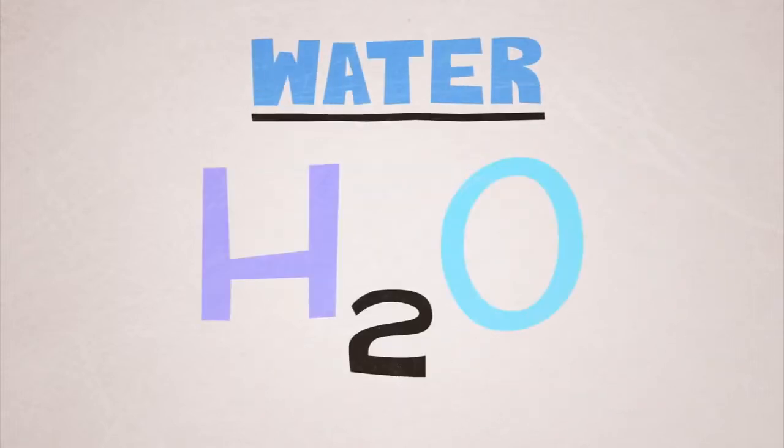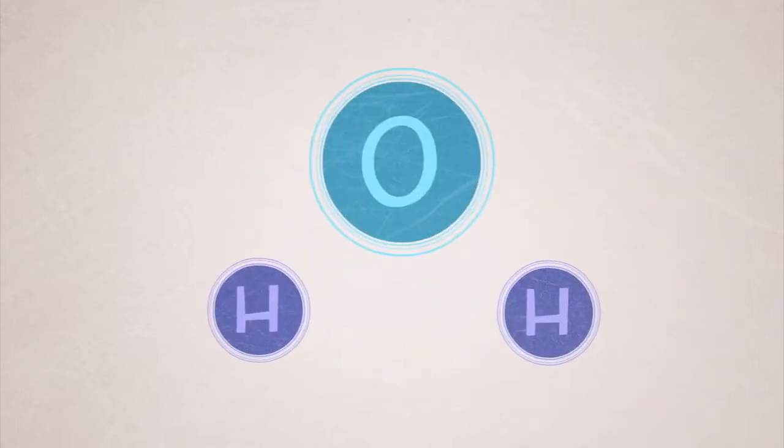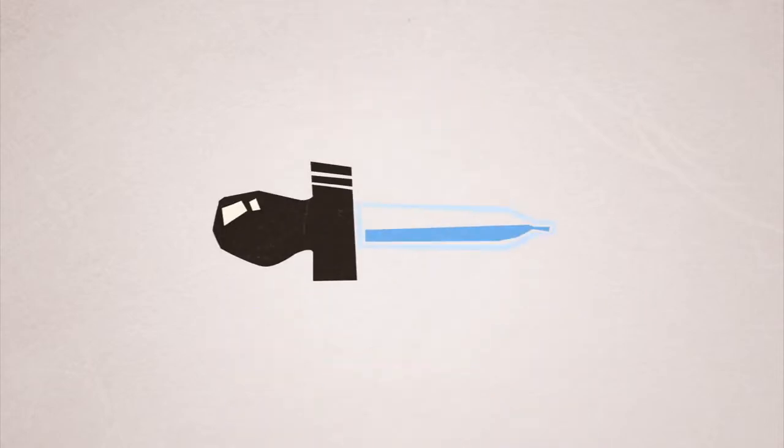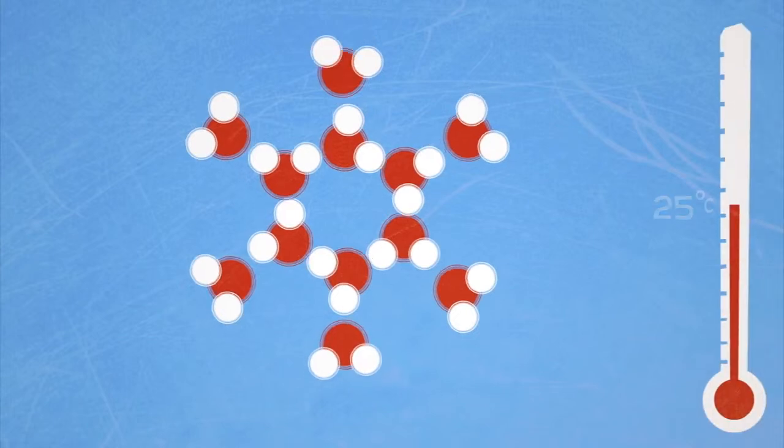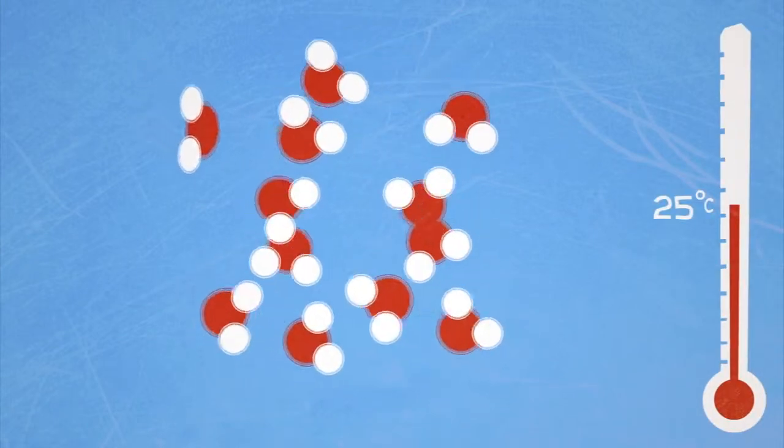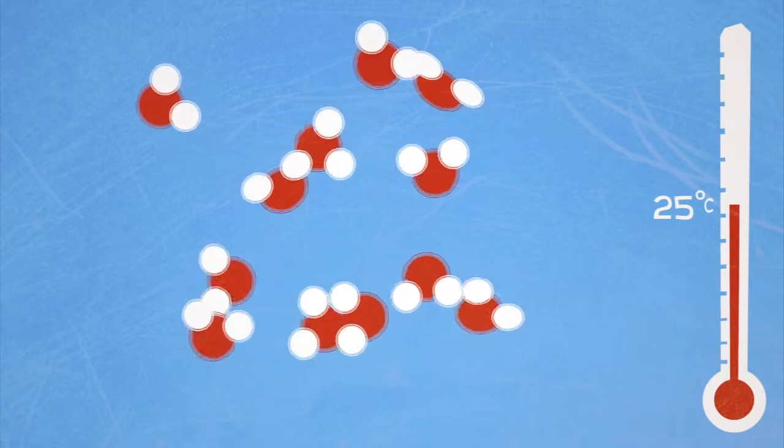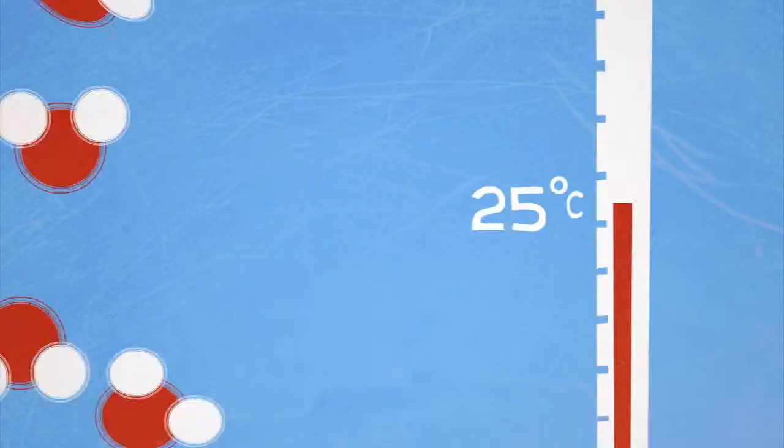You already know that every water molecule is made up of two hydrogen atoms bonded to one oxygen atom. Let's look at a few of the molecules in a drop of water, and let's say the temperature is 25 degrees Celsius. The molecules are bending, stretching, spinning, and moving through space.